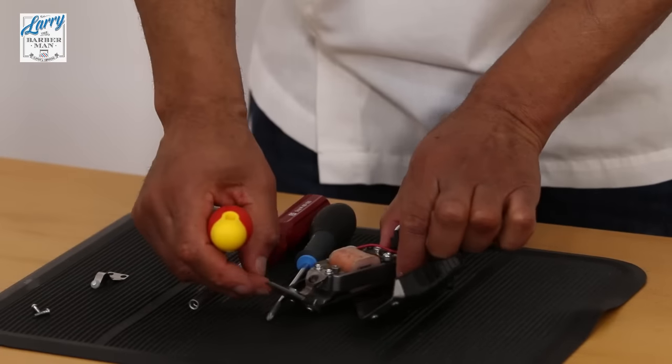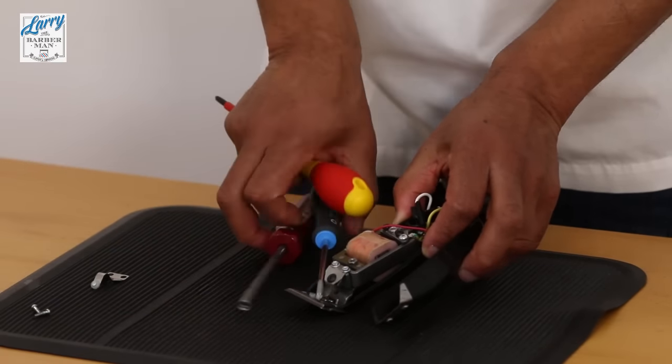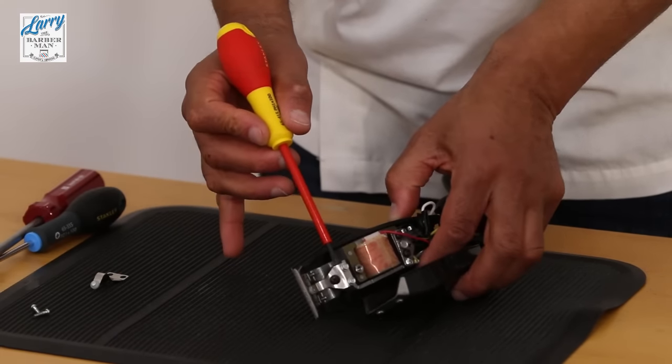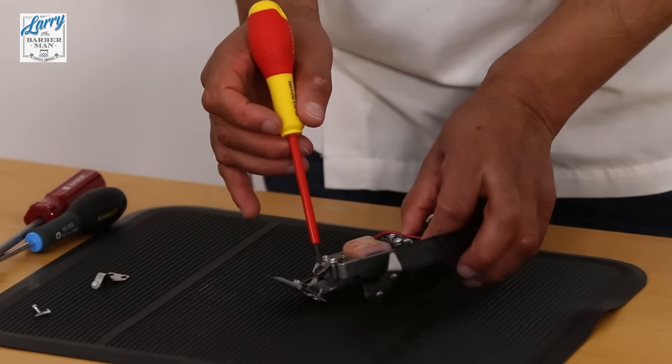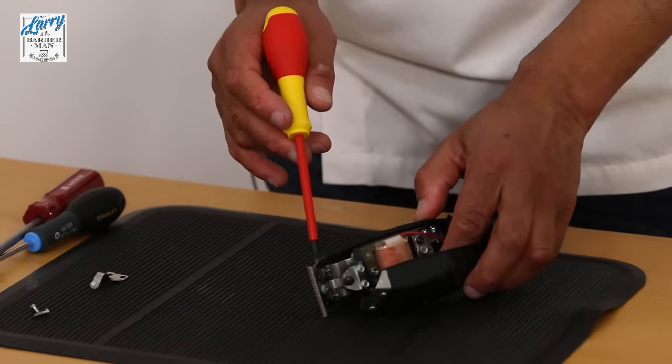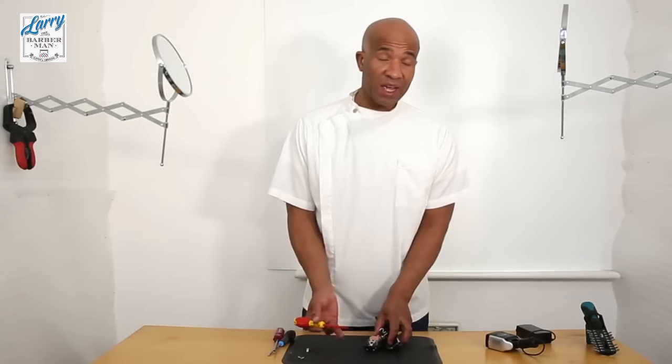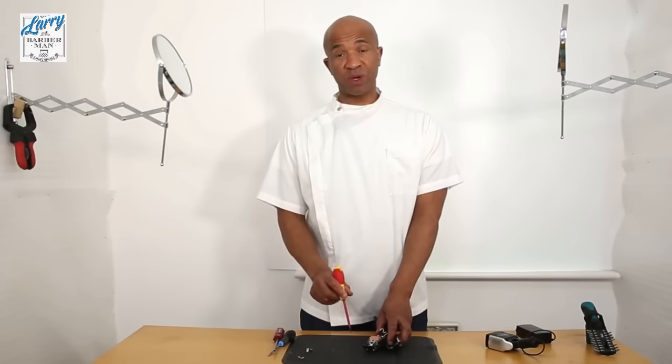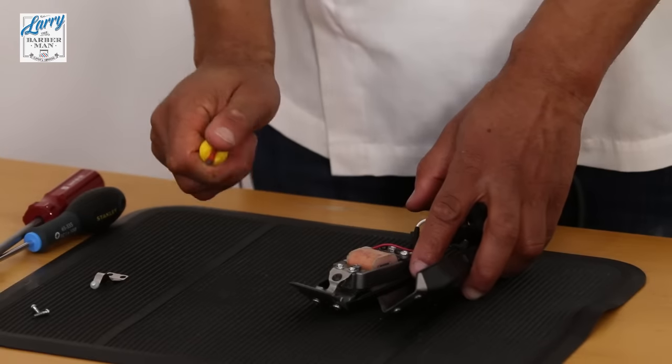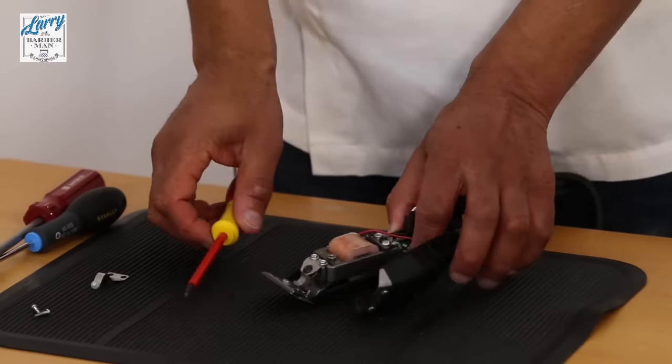Right so what we need to replace here is this one which is the tension spring. As you can see this tension spring is a little bit battered and bruised and mangled to be honest with you. So what we want to do is remove that and put the new spring in so when we do make the adjustments the tension spring will be responsive to the blade.